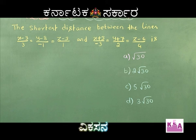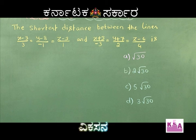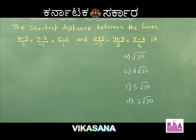The next question: the shortest distance between the lines (x−3)/3 = (y−8)/(−1) = (z−3)/1 and (x+3)/(−3) = (y+7)/2 = (z−6)/4.